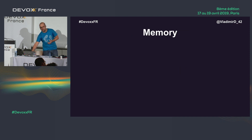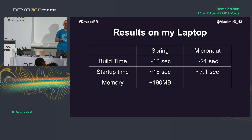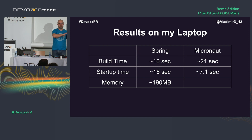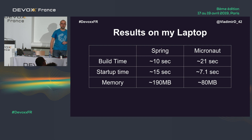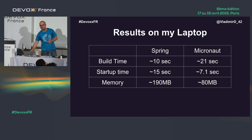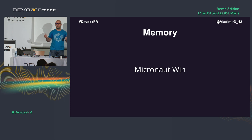For memory: without any tweaking or configuration flags, Spring Boot used 190 megabytes, Micronaut used 80 megabytes — a big difference. That's because Micronaut doesn't keep all the reflections and proxies in memory at runtime. Micronaut wins on memory as well.